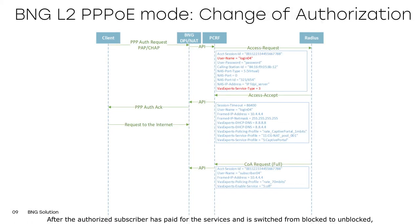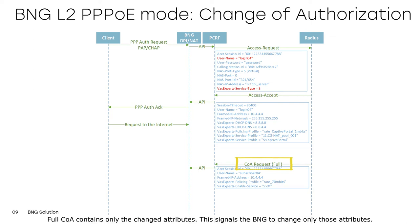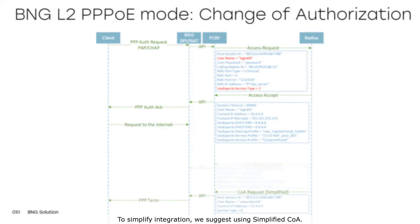After the authorized subscriber has paid for the services and is switched from blocked to unblocked, in order not to break the current session, a change of authorization can be sent from the RADIUS server. Full COA contains only the changed attributes, which signals the BNG to change only those attributes.